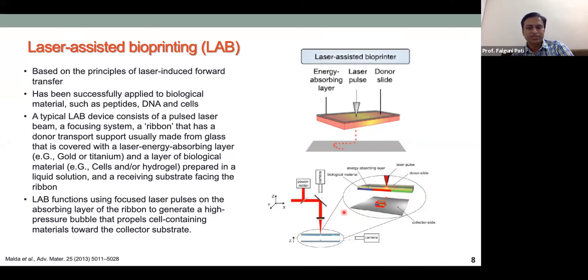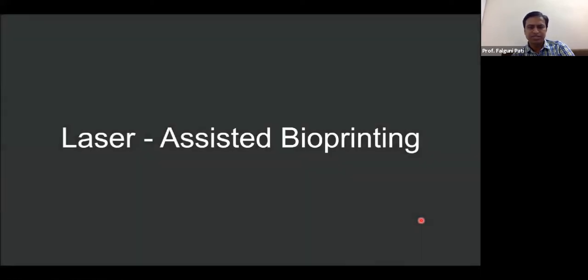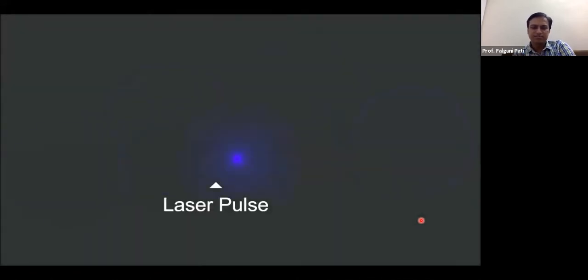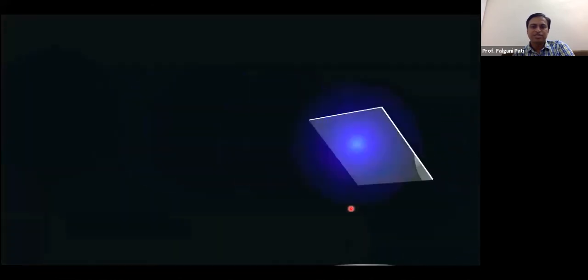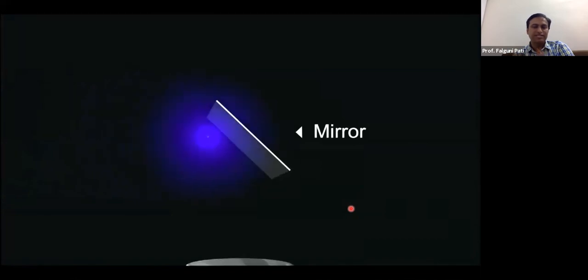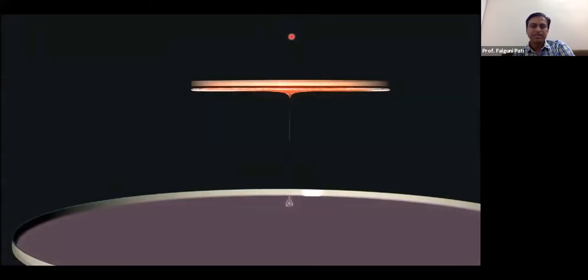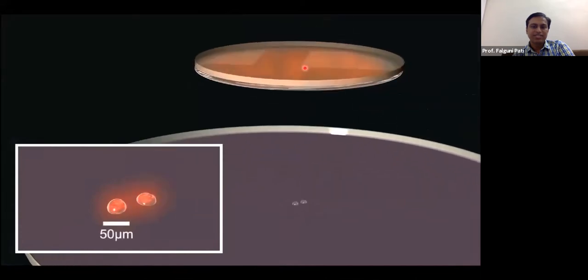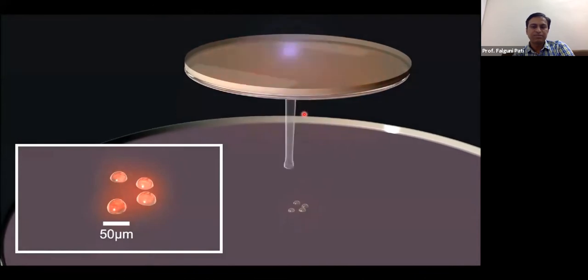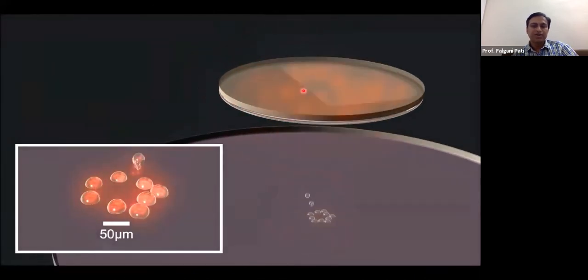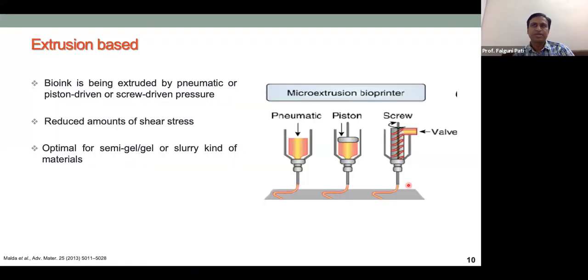A video shows this process: a photon strikes a mirror, is deflected toward a focusing lens, then hits the ribbon. The gold heats up, a drop is formed, and it deposits on the collecting plate. By controlling the light movement, different patterns can be created based on design. This technique is also called Light-Induced Forward Transfer (LIFT).